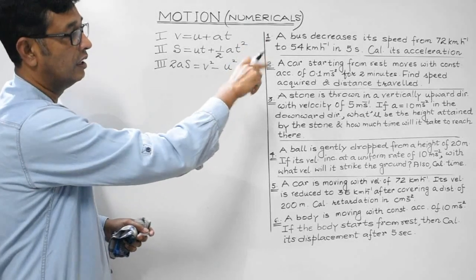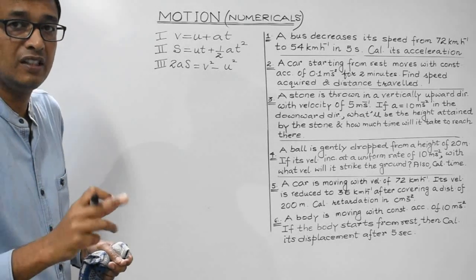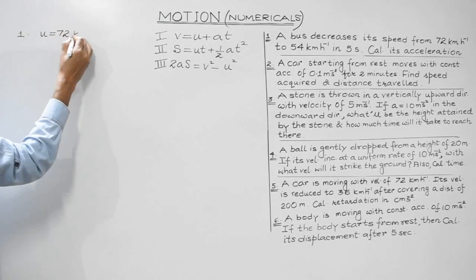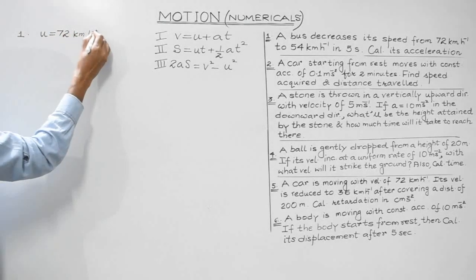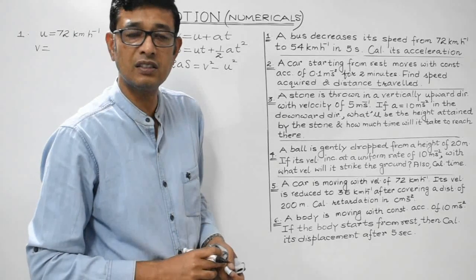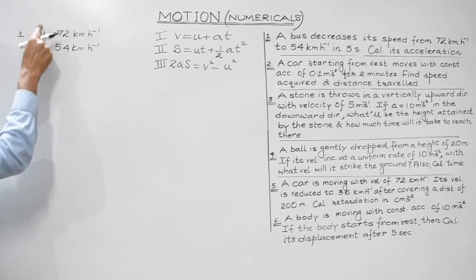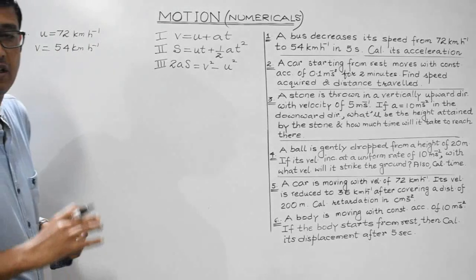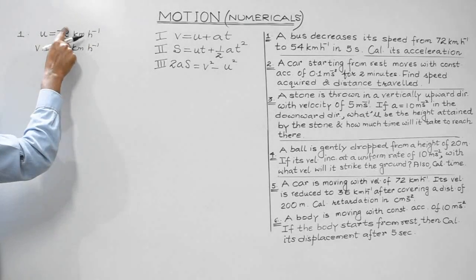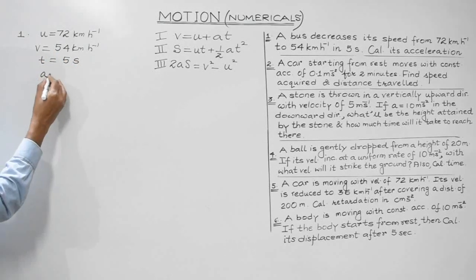The initial speed u is 72 km/h and after 5 seconds the final speed v is 54 km/h. We write down this given information: u is the initial velocity, v is the final velocity, and the body decreases its speed from 72 to 54 in time t = 5 seconds. We need to find the acceleration.